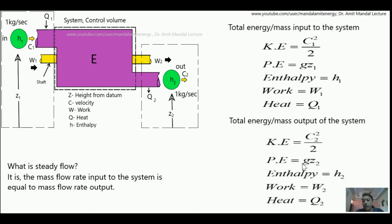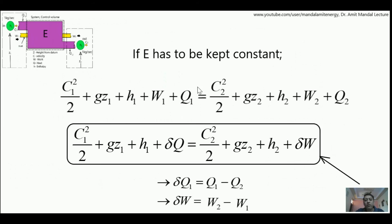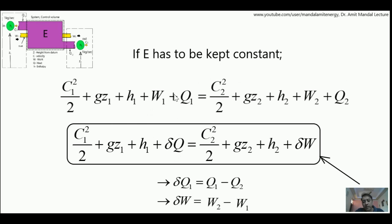The algebraic sum of all energy inputs and outputs must be equal. Suppose the left-hand side is 100 joules per kg and the right-hand side is 80 joules per kg — they are not equal. If input energy is higher than output, some energy remains inside and E increases. If input is lower than output, E decreases. So to keep E constant, total energy input must exactly equal total energy output. Rearranging: taking Q2 to the left gives Q1 minus Q2, written as ΔQ; taking W1 to the right gives W2 minus W1, written as ΔW. This is what is called the steady flow energy equation.